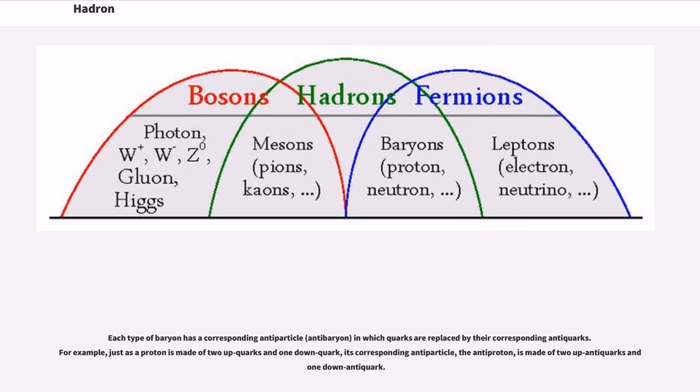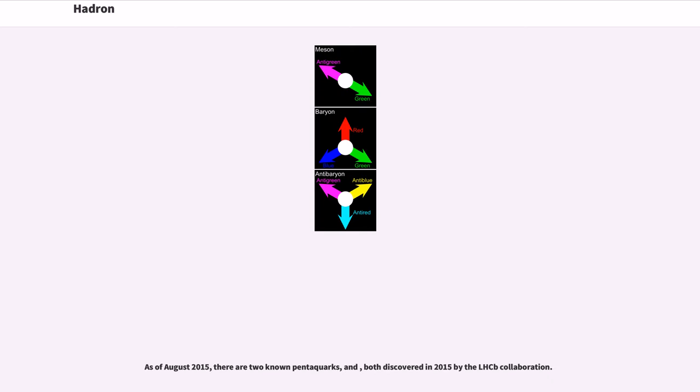Each type of baryon has a corresponding antiparticle (antibaryon) in which quarks are replaced by their corresponding antiquarks. For example, just as a proton is made of two up quarks and one down quark, the antiproton is made of two up antiquarks and one down antiquark. As of August 2015, there are two known pentaquarks, both discovered by the LHCb collaboration.